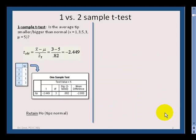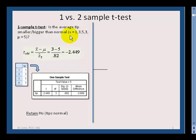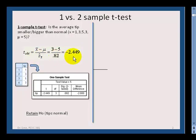If you remember, in your last adventure we had the one-sample t-test. An example would be: is the average tip smaller or bigger than normal? Let's say you earned tips of one, three, five, and three at your last four tables, and you're comparing that to some population information — a long-term expected tip of five. Formula-wise, you compare that sample mean of three to five, figure out the standard error, and get a t-value.